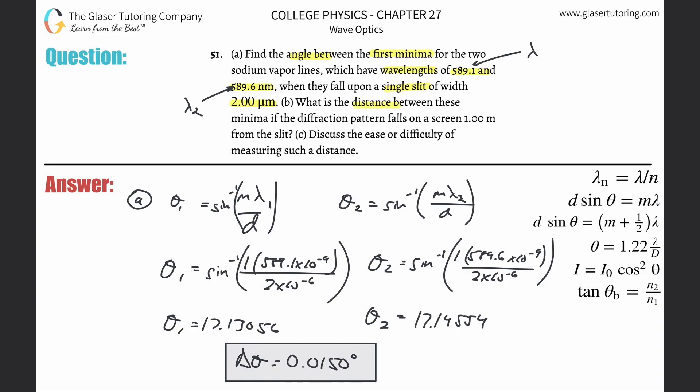What is the distance between these minima if the diffraction pattern falls on a screen 1 meter from the slit? So basically what we're doing here is, what is the distance between these minima?